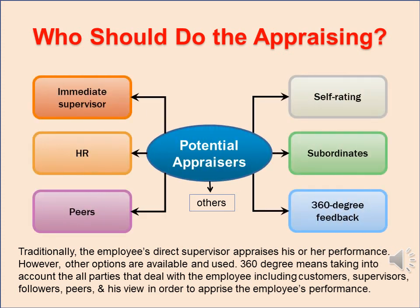Who should be responsible for the performance appraisal of employees? The most important party is the immediate supervisor. We also have peers and colleagues, employee self-rating, subordinates evaluating the employee as a leader, and HR evaluating compliance with HR rules. The most effective approach is 360-degree feedback, which takes into account all parties that deal with the employee, including customers, supervisors, followers, and peers.